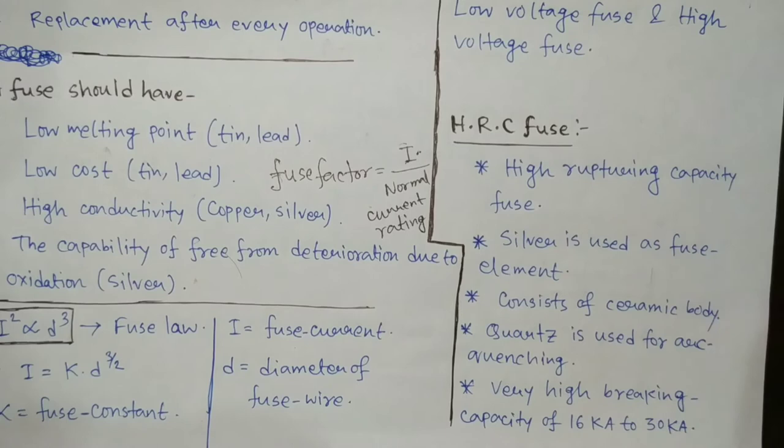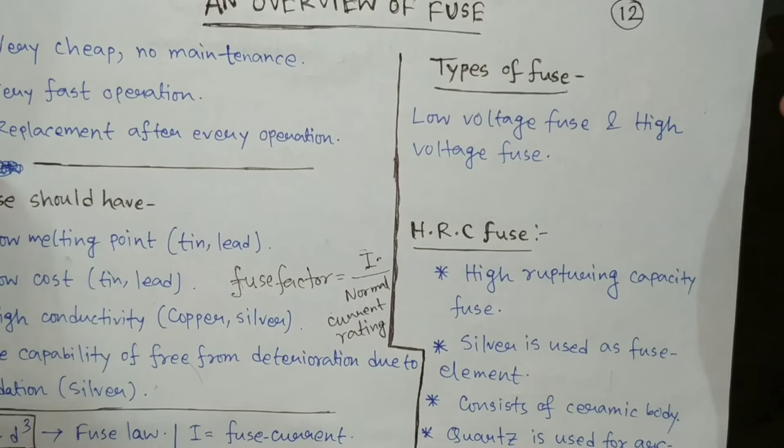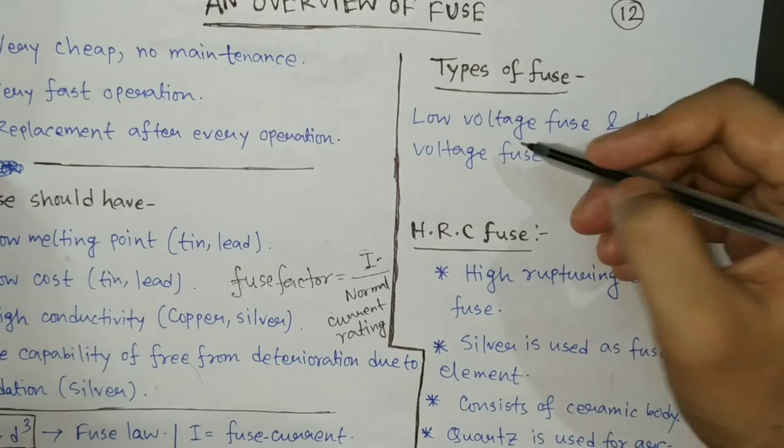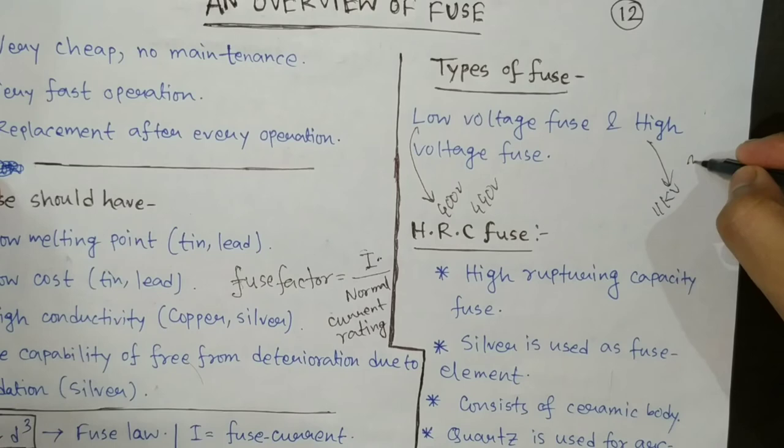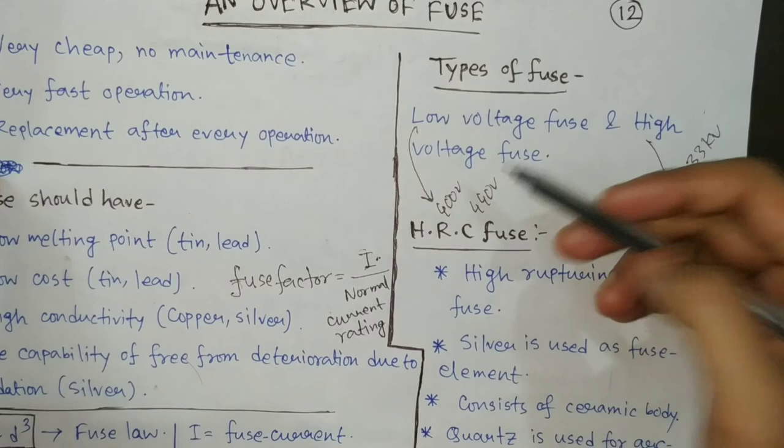Next is the types of fuse. Normally fuse can be divided as low voltage fuse and high voltage fuse. Low voltage means like 400 volts or 440 volts, and high voltage means like 11 kV or 33 kV.